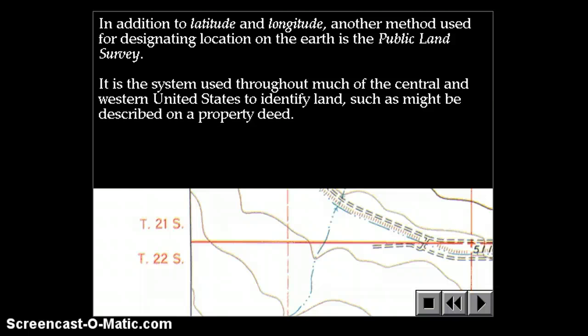In addition to latitude and longitude, another method used for designating location on earth is the public land survey. It is the system used through much of the central and western United States to identify land, such as might be described on a property deed or a tax statement.